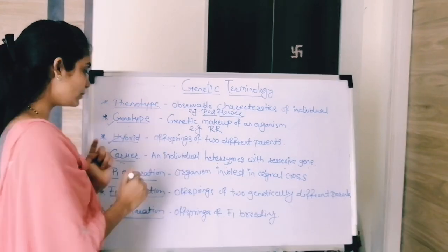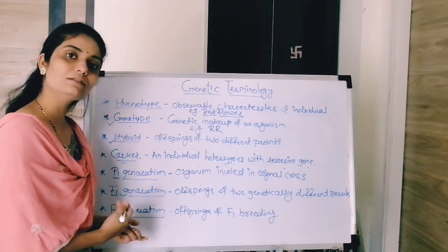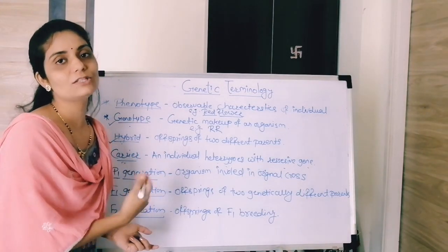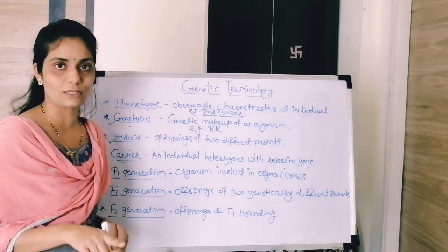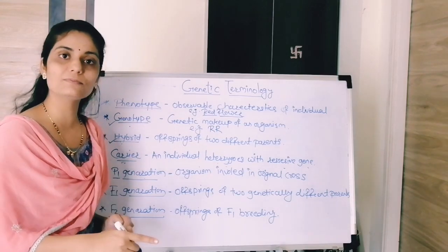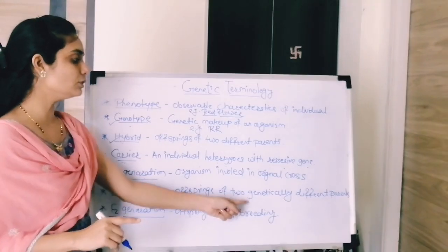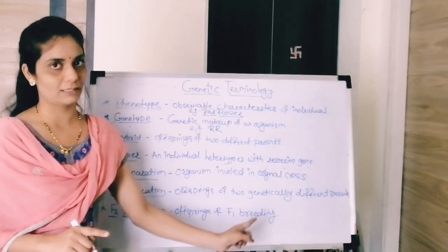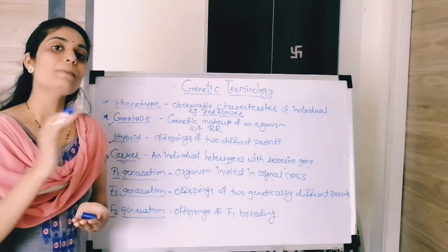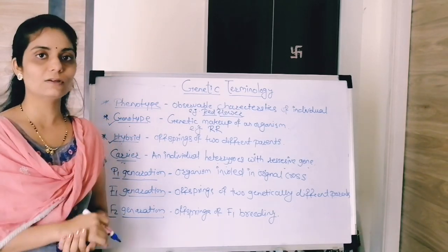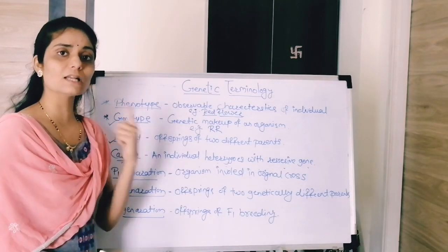Next is the F1 generation, also known as the first filial generation. The first filial generation refers to the offspring of two genetically different parents — the offspring obtained after the parental generation. After F1, there is the F2 generation, also known as the second filial generation, which is the offspring obtained from F1 breeding.